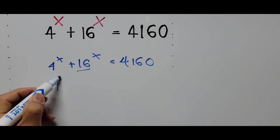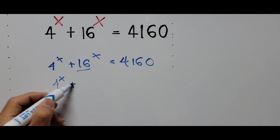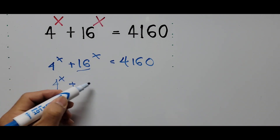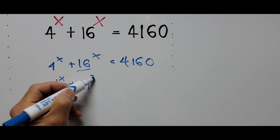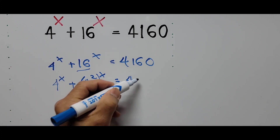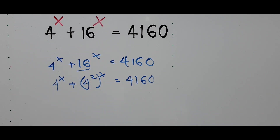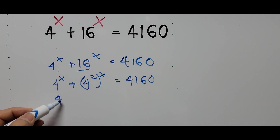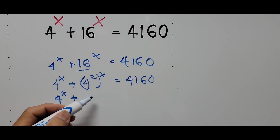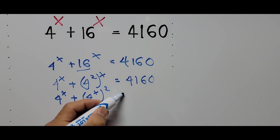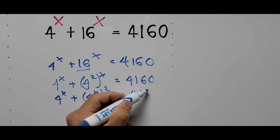So it is now 4 to the power x plus 16, which can be written as 4 squared, so that is (4²) to the power x equals 4160. From here this can be written as 4 to the power x plus 4 to the power 2x equals 4160.